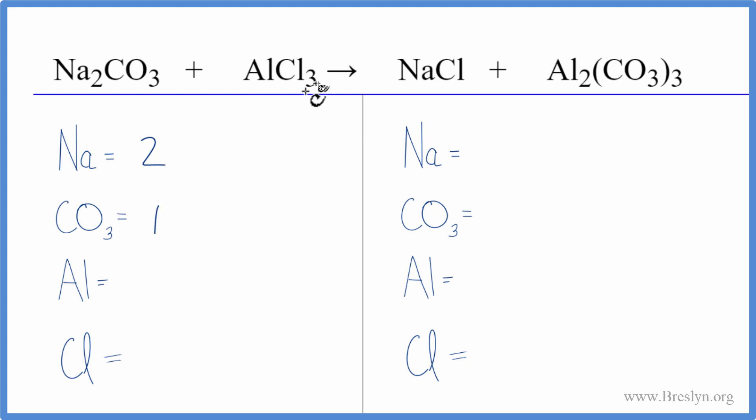We then have one aluminum and three chlorines. On the product side we have one sodium, one carbonate times three. That'll give us three of those. Two aluminums and then chlorines we have one of those.